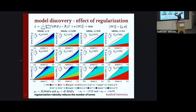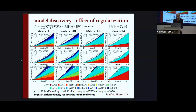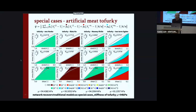One thing that works well to reduce the number of terms is L2 regularization added to the loss function. With a penalty parameter alpha, you can play with the number of terms. If you ramp up this regularization term, you have a slightly worse fit but can reduce to only two remaining terms. Depending on how many terms you want to discover, you can play with how accurate the fit is. You can also use this to fit existing models to — in this case, to Tofurky — and learn about the stiffness of materials.